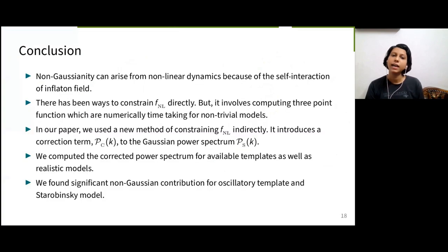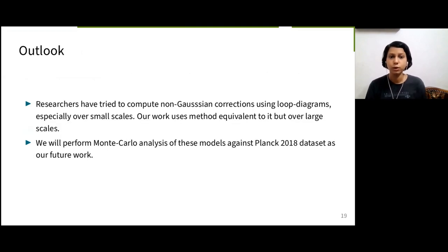In conclusion, I have told why and how we are hunting for non-Gaussianities. Then I briefly explained our paper where we use an indirect method of constraining FNL. Using that method, we show that the correction to power spectrum due to FNL from models with features in their potential give rise to non-negligible corrections to the angular spectrum of CMB. There has also been work in the community on finding non-Gaussianities using the method of loop correction for smaller scales. Our method is equivalent to it, but it covers large scales.